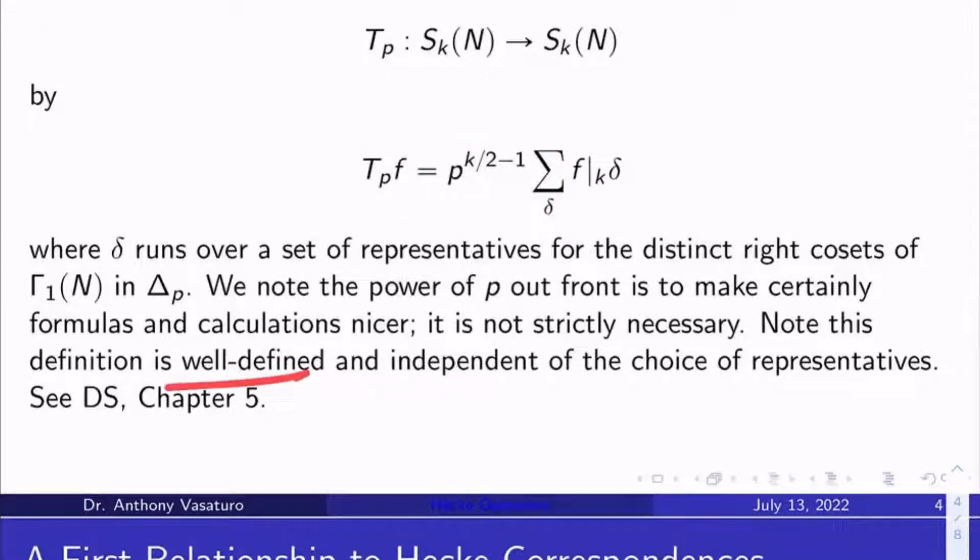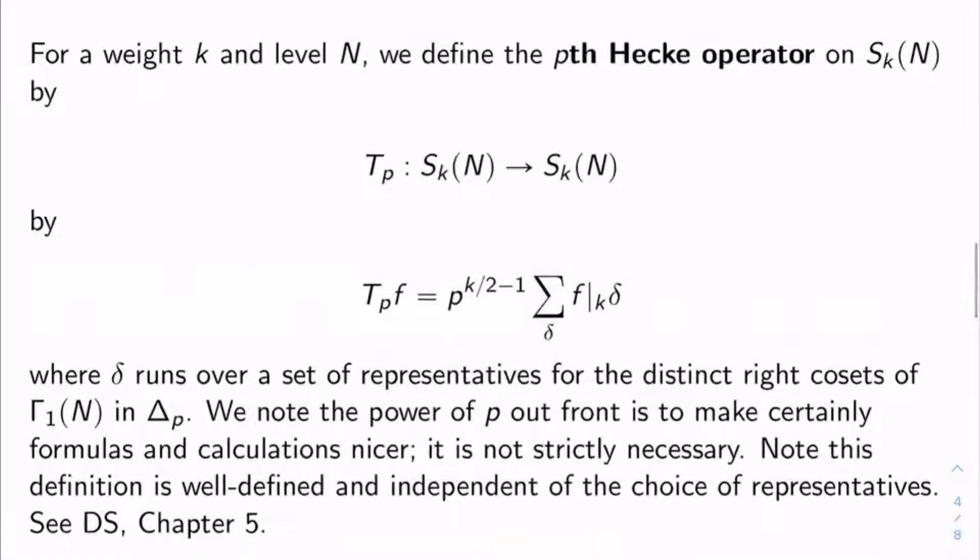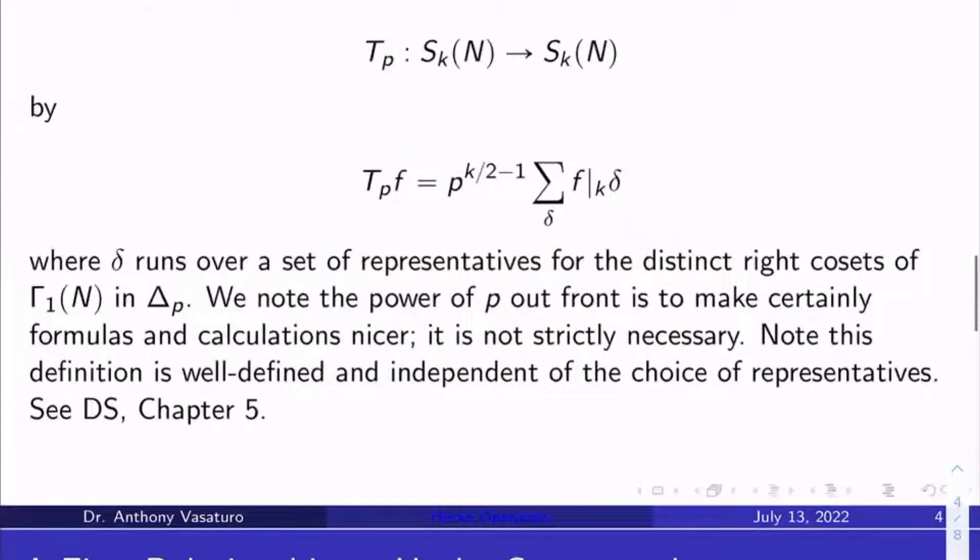This definition is well defined, meaning it does end up, the image is in s sub k n, and it's independent of the choice of representative. You might ask, what if you take a different set of representatives for the distinct right cosets? You can check that you end up with the same formula in any case. So any other set of representatives will look like delta gamma for some gamma in gamma sub 1 of n.